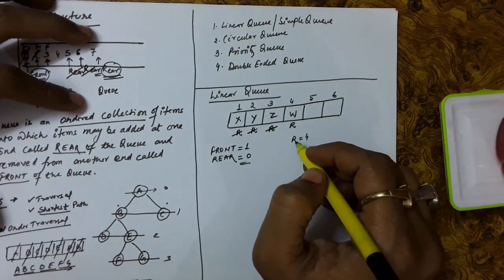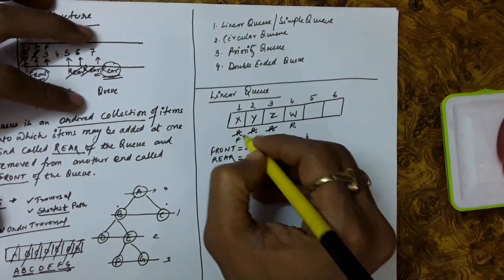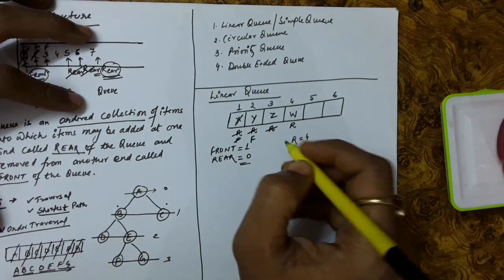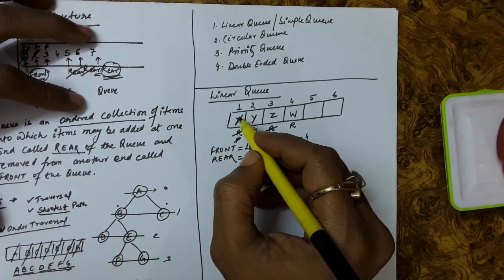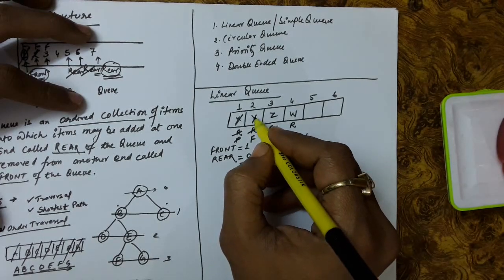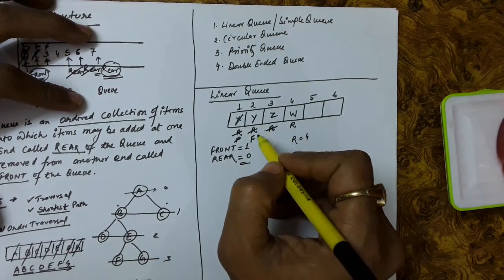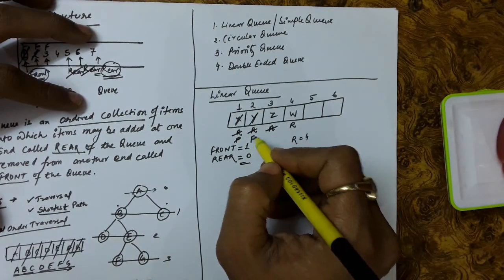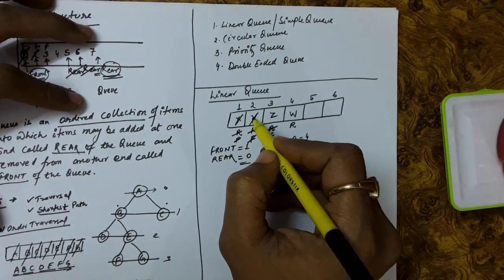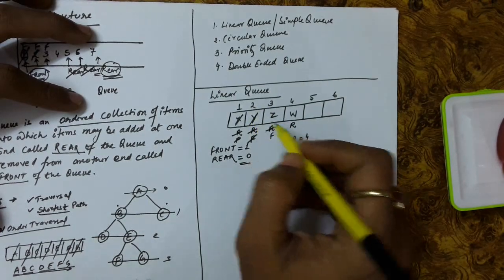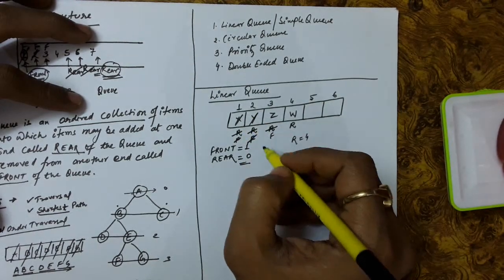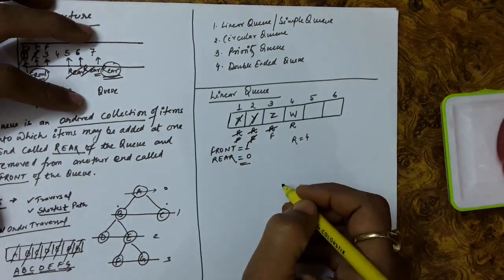Now if we have to remove an element, front is at 1. Simply remove this element and update front by 1. So x was the first item to be inserted and it is the first item to be deleted. If we remove another element, y is deleted and front is updated again. This way, we can see it is following the first-in first-out order.